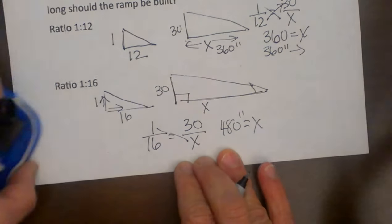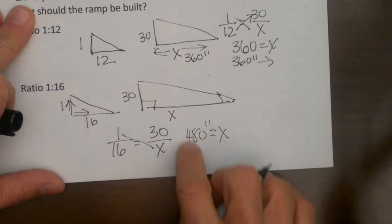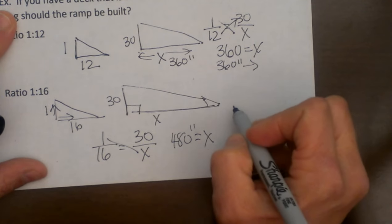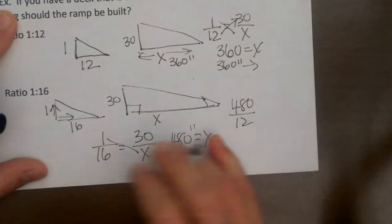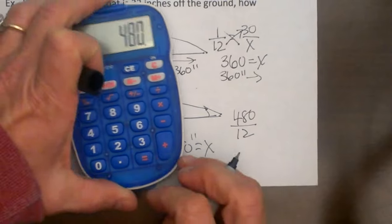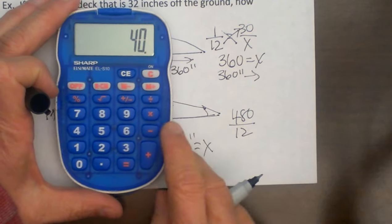Now that is fine and dandy, but how many feet would that be? Well, there are 12 inches in a foot. So I am just going to take 480 and divide it by 12. That gives me 40 feet.